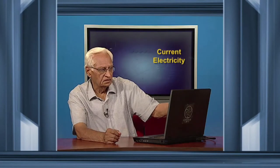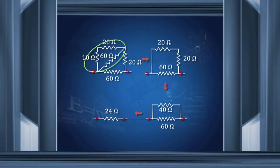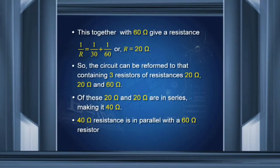Let us take another example. Consider a circuit which has five resistances. These two are in series: 10 plus 20 is 30. They are in parallel with 60. Therefore, 1/30 plus 1/60 gives an equivalent of 20. So this resistance is 20. This is also 20. They are in series, so they make the resistance 40.